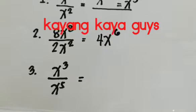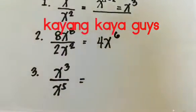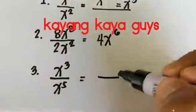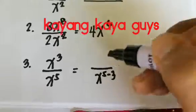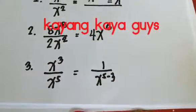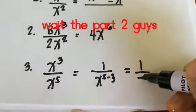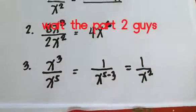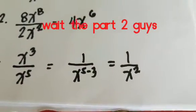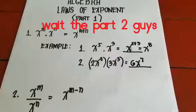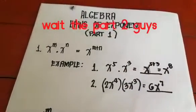For the last example: x cubed divided by x to the fifth power. The exponent result is negative — 3 minus 5 equals negative 2 — so you put 1 over x raised to 2. The answer is 1 over x squared. That is Part 1 of the laws of exponents — till next time.